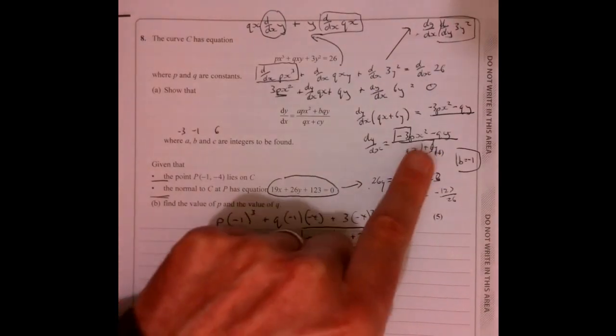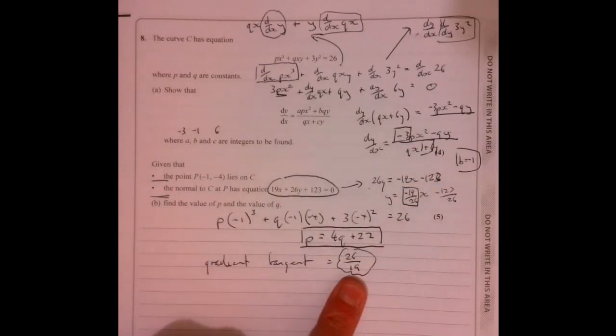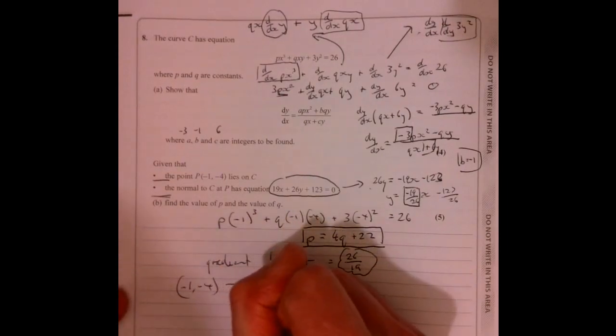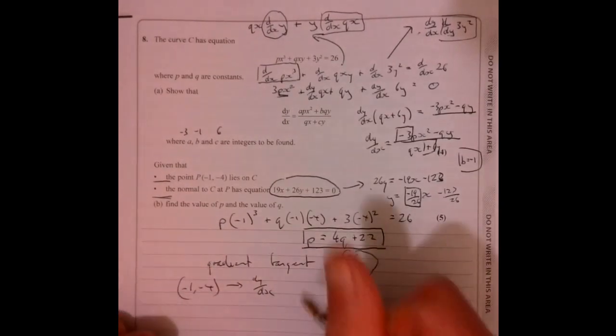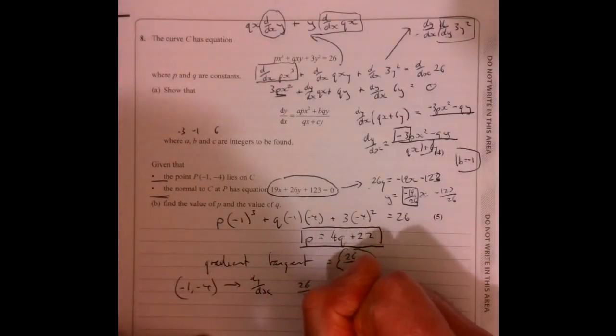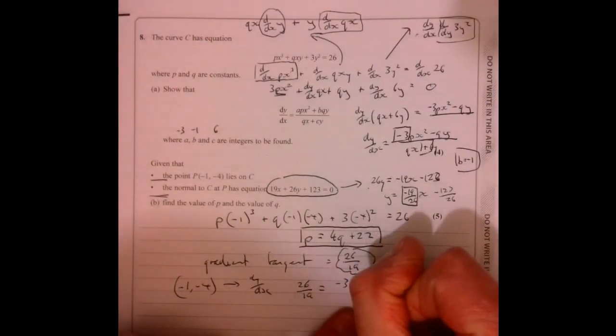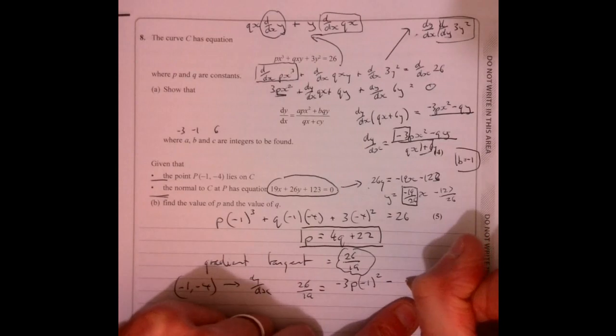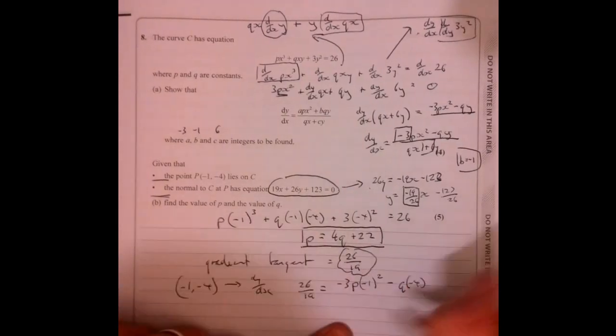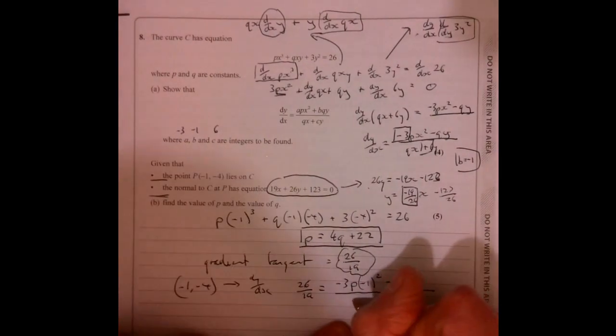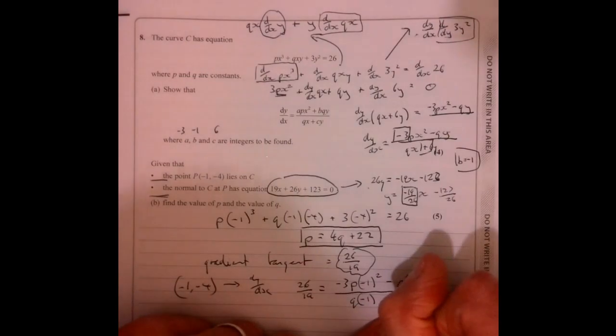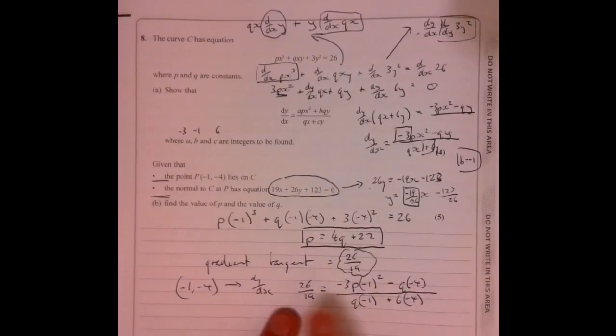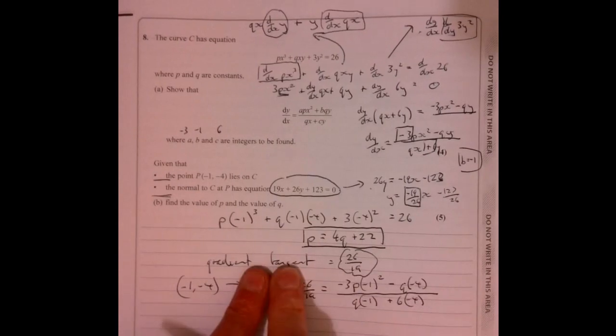We know that if we plug in (-1, -4) it gives me that answer. Now this is the key bit about this question, is knowing that bit just there. What we're going to do is we're just going to put in (-1, -4) into dy over dx because that's what we just worked out. So we know that 26/19 equals -3p(-1)^2 - q(-4), that divided by q(-1) plus 6 times -4.